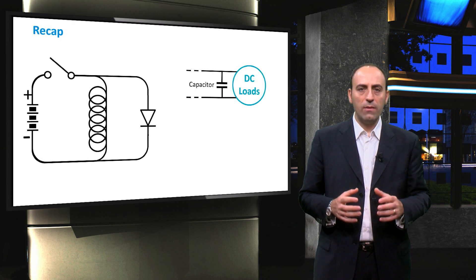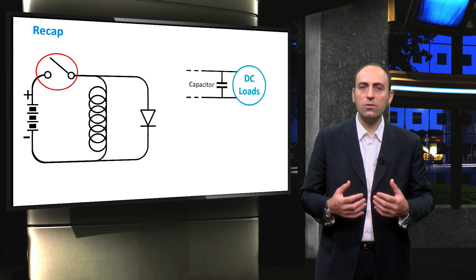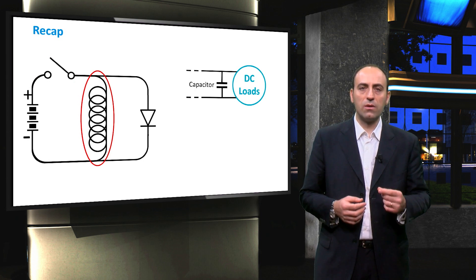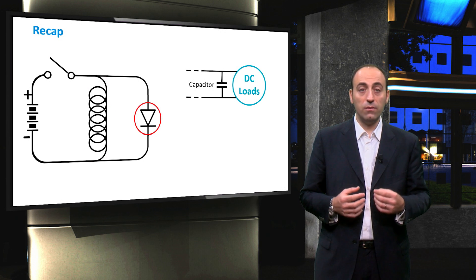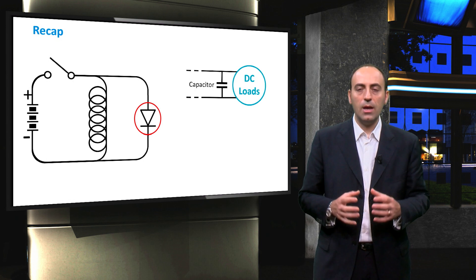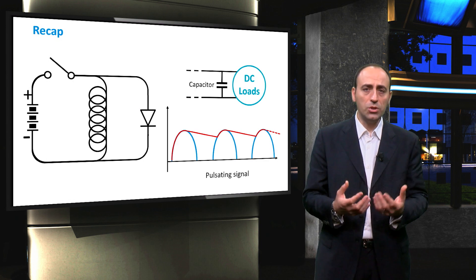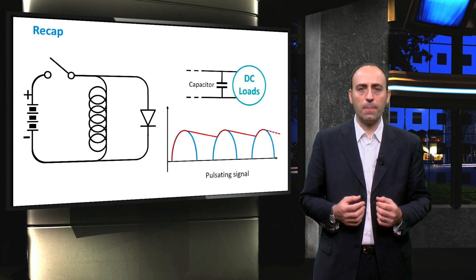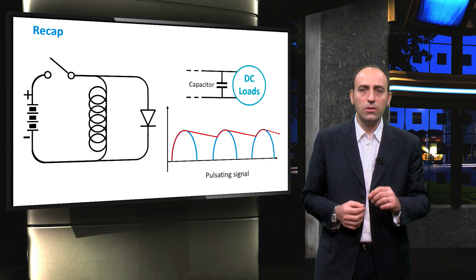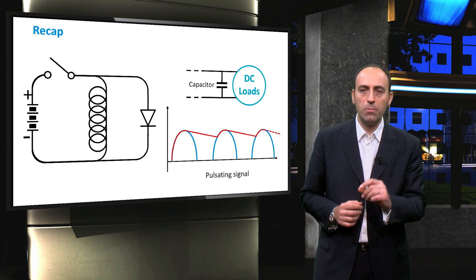To conclude this video, we have seen three different types of switches, then how an inductor works, and the importance to use a flyback diode to avoid the voltage spike seen across the switch when we open the circuit. Lastly, we also introduced the smooth capacitor, which attenuates the signal periodicity. In the next video, we are ready to see the first topology of a DC-DC converter, which is the buck converter.